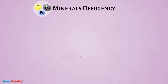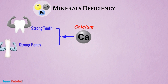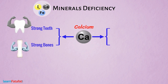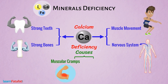Mineral Deficiency. Calcium is essential for strong teeth and bones. It is also important for muscle movement and the nervous system. Deficiency of calcium causes muscular cramps and abnormal heartbeat.